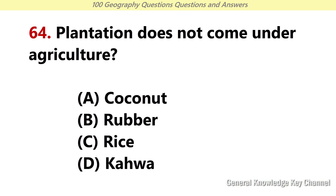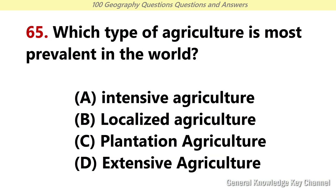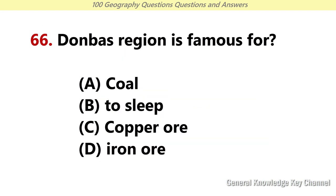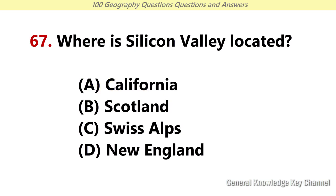Which plantation does not come under agriculture? Answer C: Rice. Which type of agriculture is most prevalent in the world? Answer B: Localized agriculture. Donbass region is famous for? Answer A: Coal. Where is Silicon Valley located? Answer A: California.